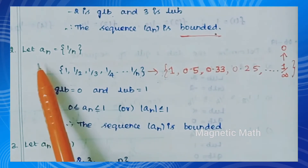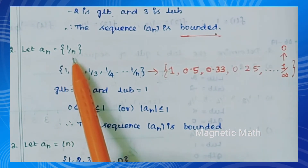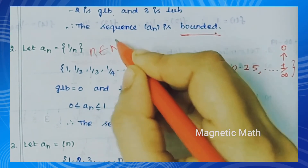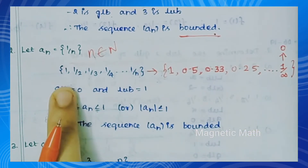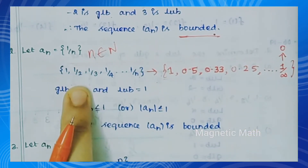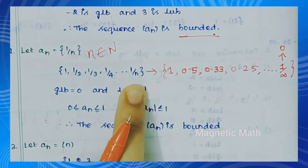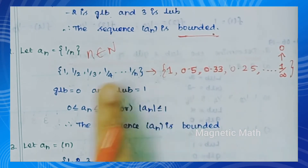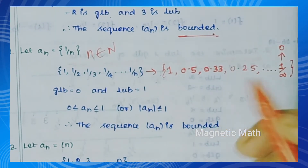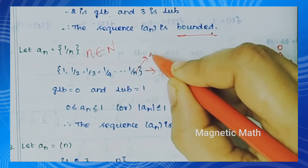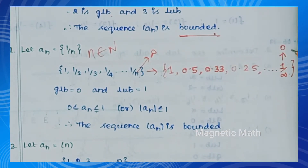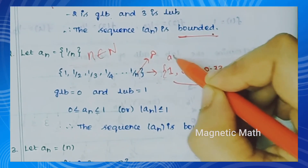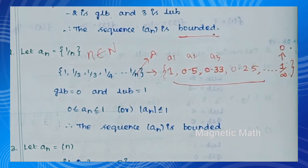Second example: let aₙ = 1/n, where n belongs to ℕ, the natural numbers. So n=1 gives 1/1 = 1; n=2 gives 1/2; then 1/3, 1/4, and so on up to 1/n. The decimal values are 1, 0.5, 0.33, 0.25, and so on. As n approaches infinity, 1/n approaches 0. So this is the actual set: a1, a2, a3, and so on.